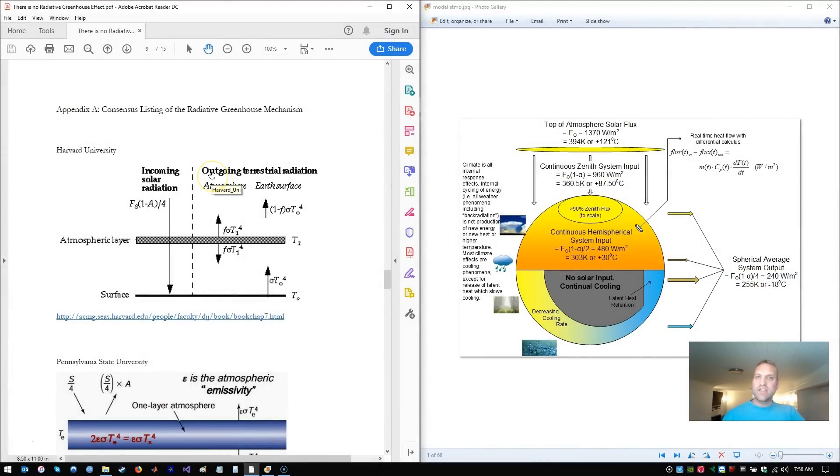Here's a diagram of modern climate physics. They have incoming solar radiation and they divide it by four in order to spread it over the entire surface area of the earth at once. And they even draw the earth as a flat line because effectively that is exactly what they're doing with the divide by four.